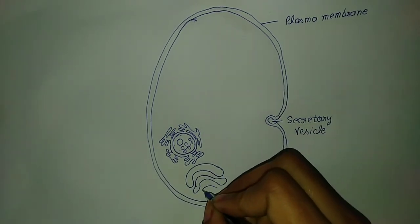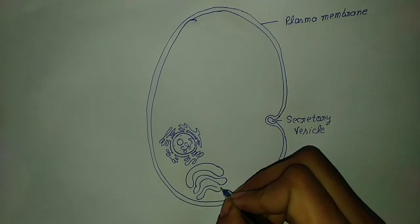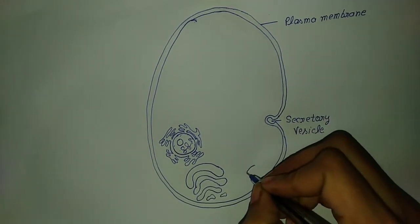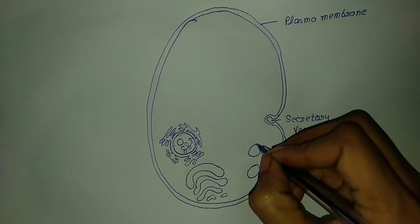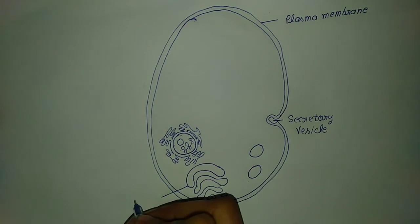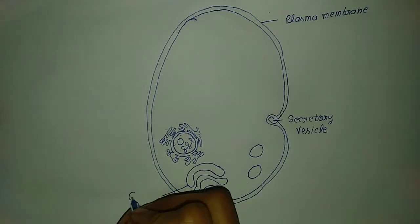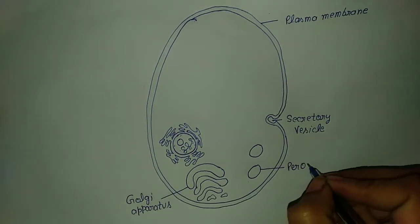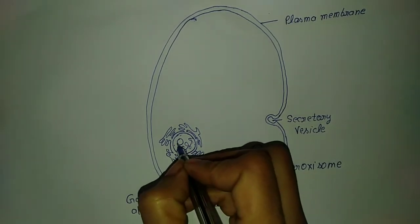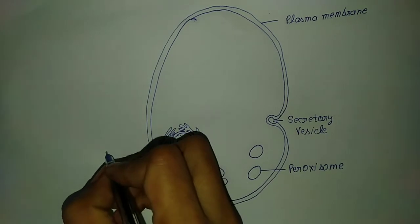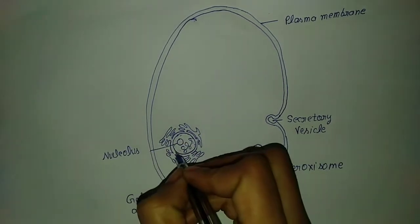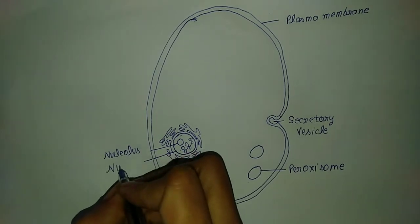These are Golgi apparatus, also called Golgi bodies. The Golgi bodies have a sac-like structure. These are peroxisomes.